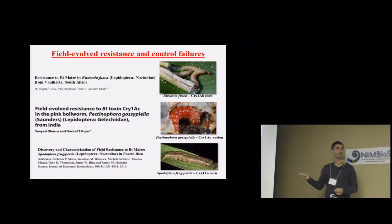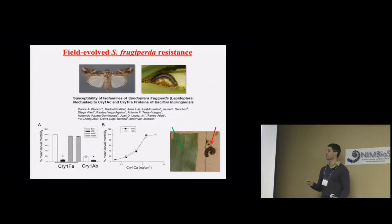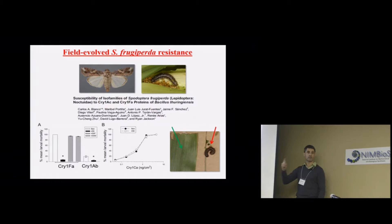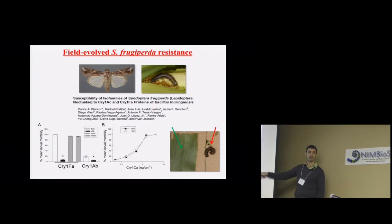This gives us a good opportunity to characterize the mechanisms relevant for field-level resistance. At the same time Nick described resistance in Puerto Rico, in collaboration with Carlos Blanco at the USDA, we collected insects from Puerto Rico and generated a strain of Spodoptera frugiperda, the fall armyworm. This strain has high levels of resistance to Cry1Fa toxin, as expected, since they're resistant to the Bt corn expressing this toxin, and they appear cross-resistant to Cry1Ac toxin.